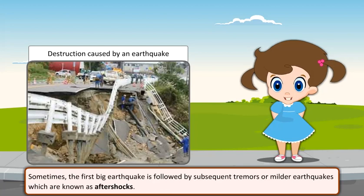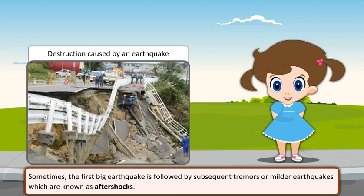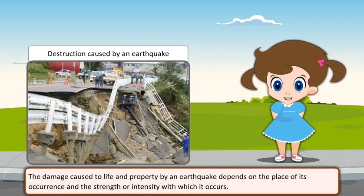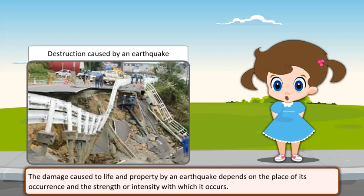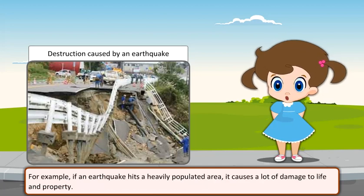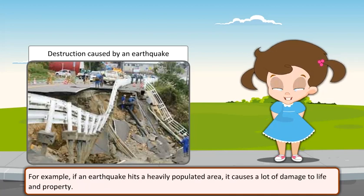Sometimes, the first big earthquake is followed by subsequent tremors or milder earthquakes, which are known as aftershocks. The damage caused to life and property by an earthquake depends on the place of its occurrence and the strength or intensity with which it occurs. For example, if an earthquake hits a heavily populated area, it causes a lot of damage to life and property.